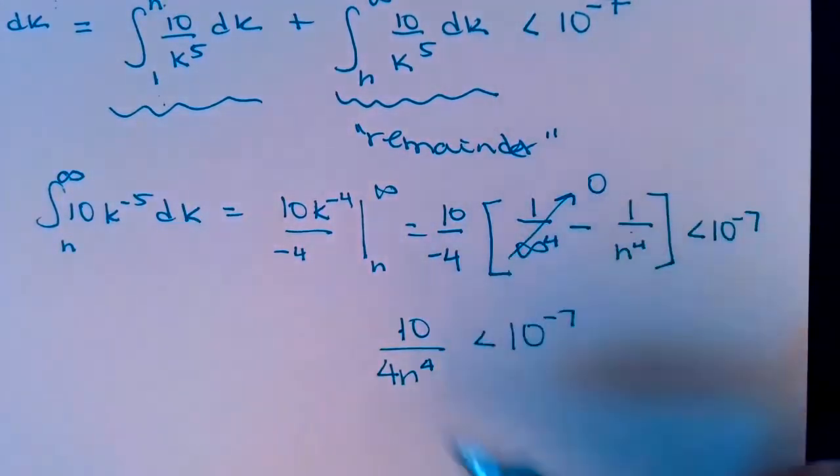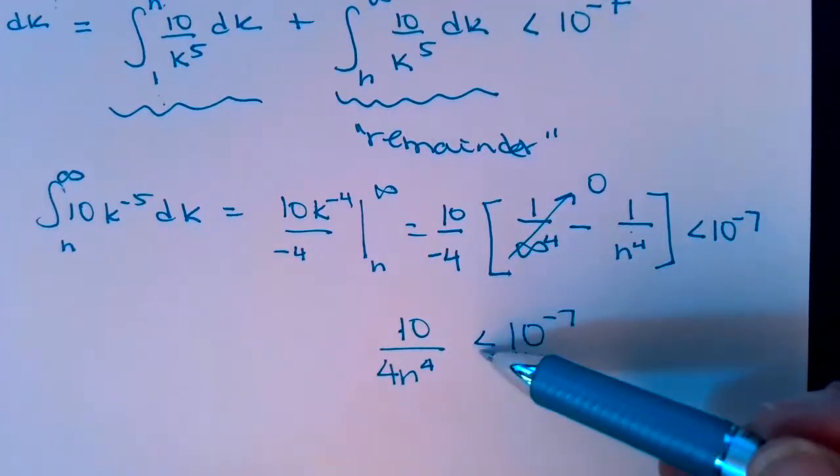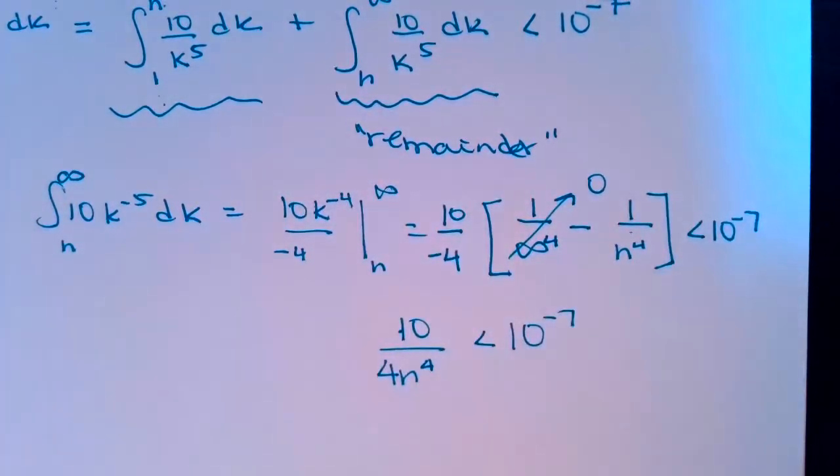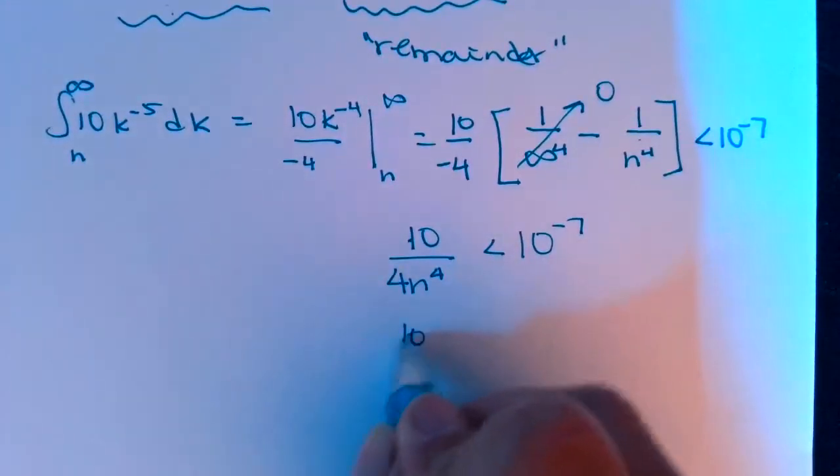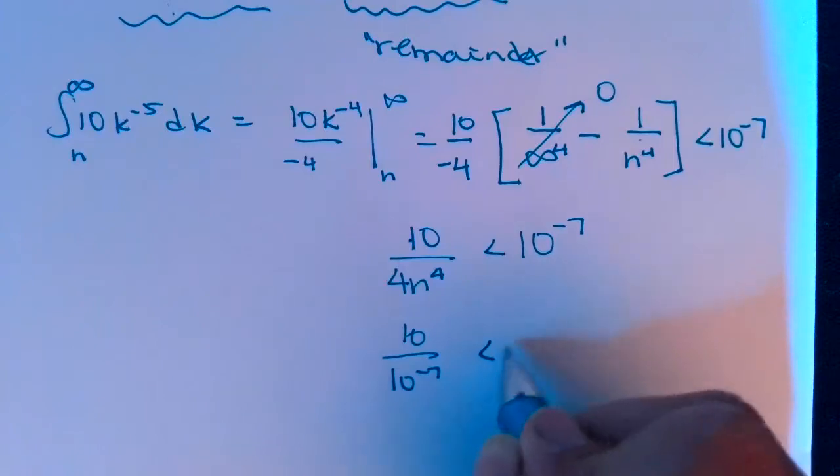So I don't have to worry about anybody being negative and affecting my inequality. So I'm going to solve this for n. So I'm going to start by cross-multiplying—the 10 to the negative 7 swaps places with the 4n to the 4th.